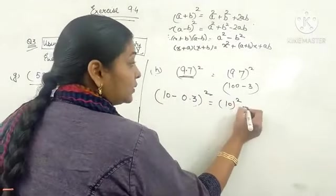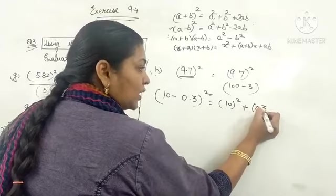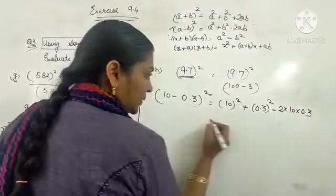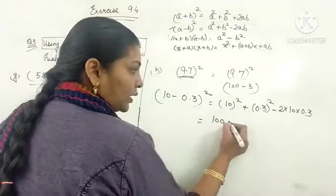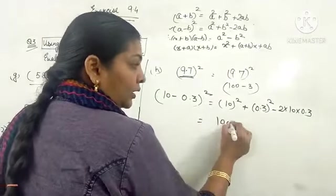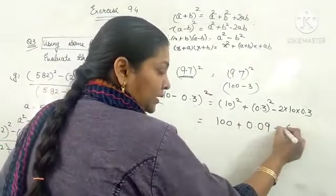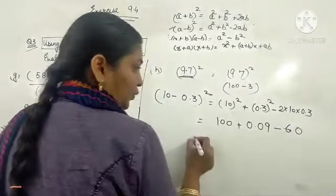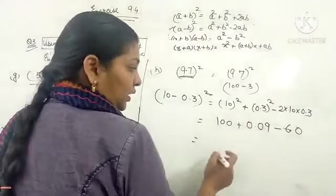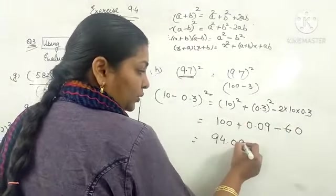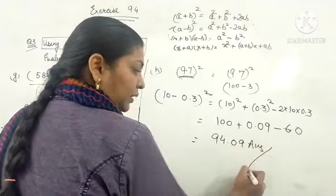10 square plus 0.3 square minus 2 into 10 into 0.3. It will be equal to 100 plus 0.09 minus 6.0. Now this will be equal to 94.09. This is the correct answer.